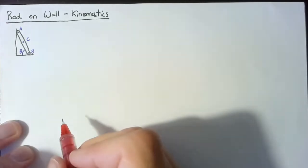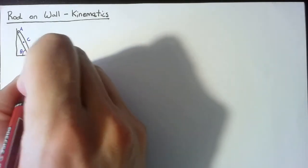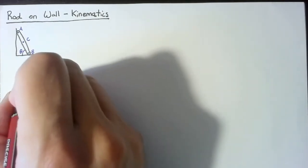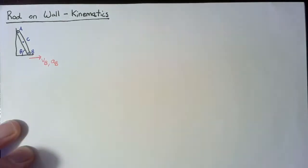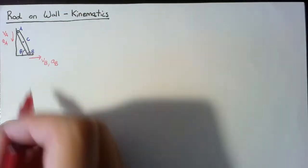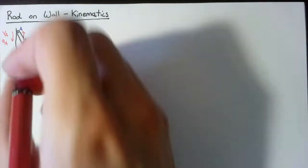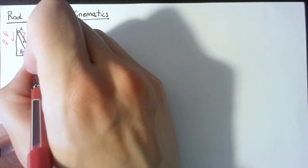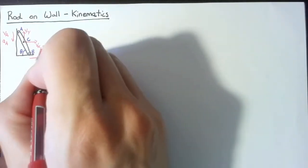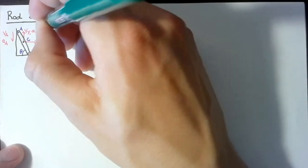Now I'm also going to name the velocities of each of these points. B is constrained to move along the floor, so we know that all of the velocity and acceleration is going to be in the x direction. So I can write the velocity of B pointing directly to the right, along with the acceleration of B. We don't know exactly how C is going to move, so we need to give it both an x velocity and a y velocity. I'm going to call these vx and vy. And we're also going to give this an angular velocity and acceleration, defined positive counterclockwise.